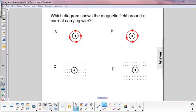Which diagram shows the magnetic field around a current carrying wire? The wire is represented by this dot and circle, and the dot tells you that the wire is coming out of the page pointed towards you.